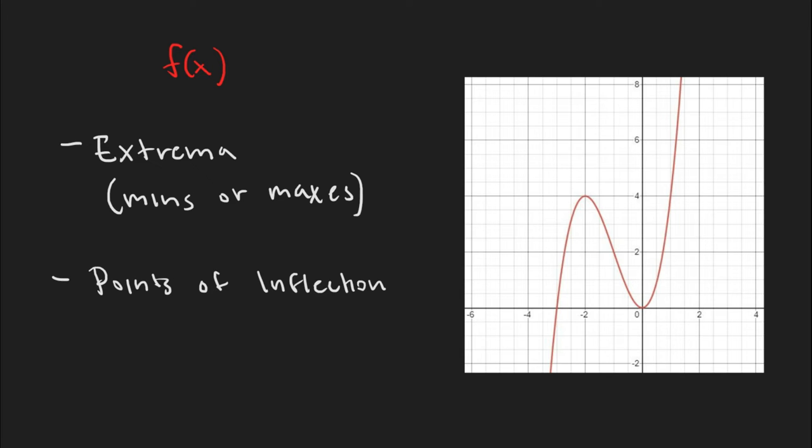If we take a look at the graph, it looks like there's a maximum when x is negative 2. There's a minimum when x is 0. And it also looks like there's a point of inflection when x is negative 1.